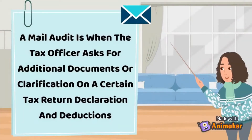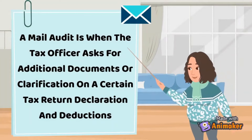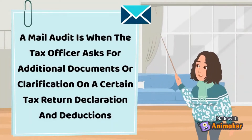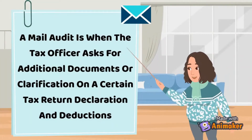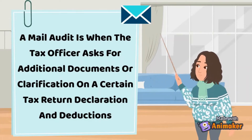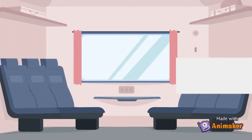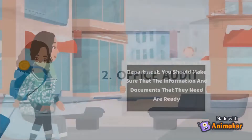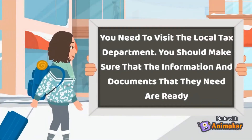First is mail audit — a mail audit is when the tax officer asks for additional documents or clarification on a certain tax return declaration and deductions. Second is office audit — you need to visit the local tax department and should make sure that the information and documents they need are ready.